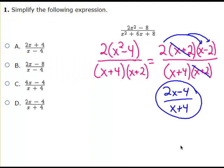Here we have a problem that is difficult for many students — simplifying a rational expression. You can only cancel out factors, so the job is to factor the numerator, factor the denominator, and then cancel out common factors. Factor out a 2 from the numerator; you still have a perfect square minus a perfect square — difference of perfect squares — giving x plus 2 and x minus 2. Factor the trinomial in the denominator: last terms multiply to 8, outers and inners add up to 6. Cancel out the common factor x plus 2 in the top and bottom. After distributing the numerator, you're left with 2x minus 4 all over x plus 4, which matches letter D.